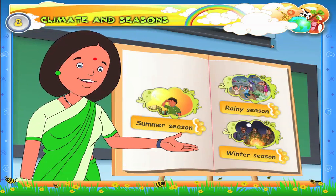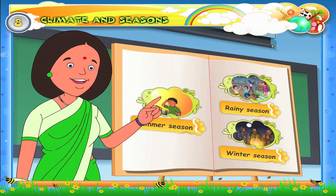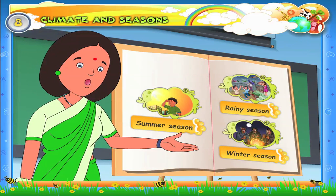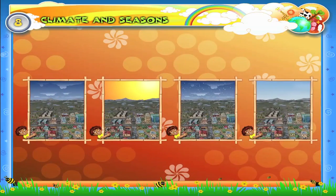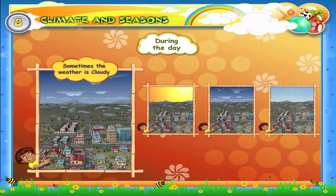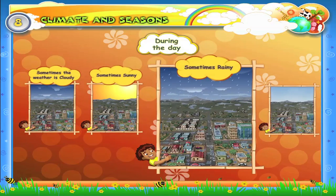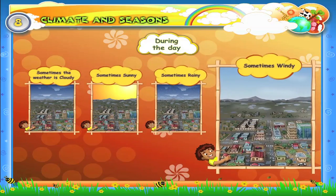Seasons change because weather changes. The weather of a place keeps on changing very often. For example, during the day, sometimes the weather is cloudy, sometimes sunny, sometimes rainy, and sometimes windy.